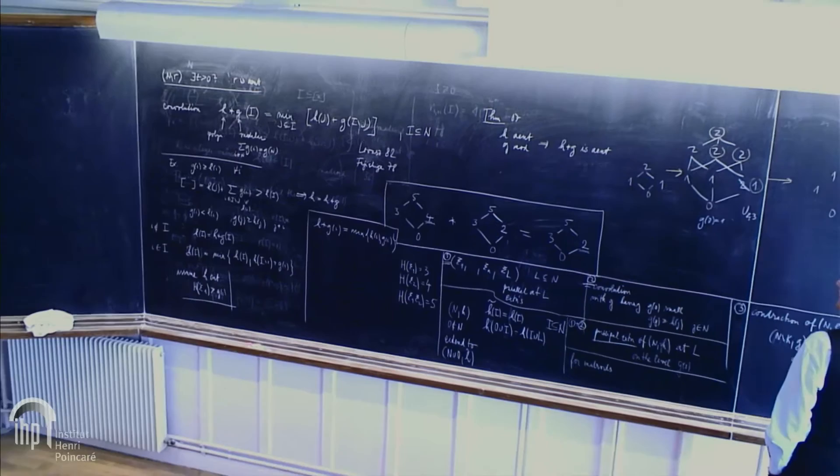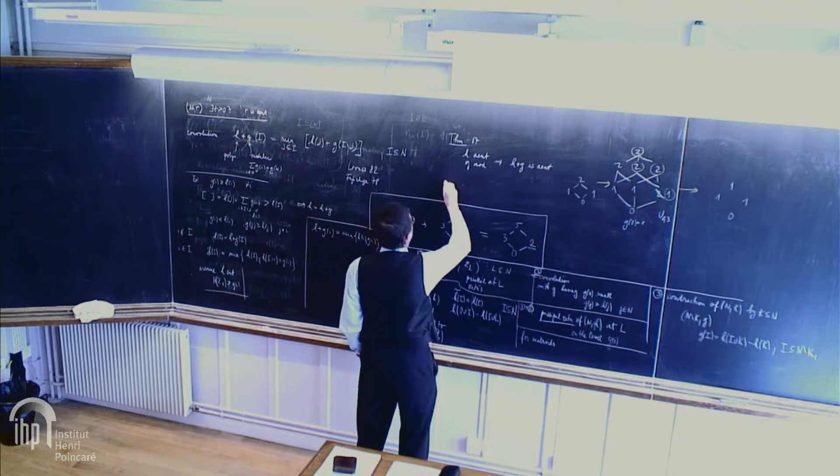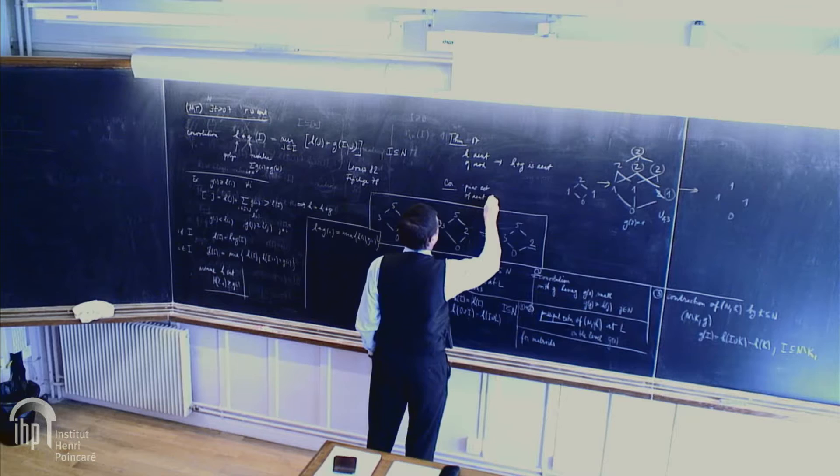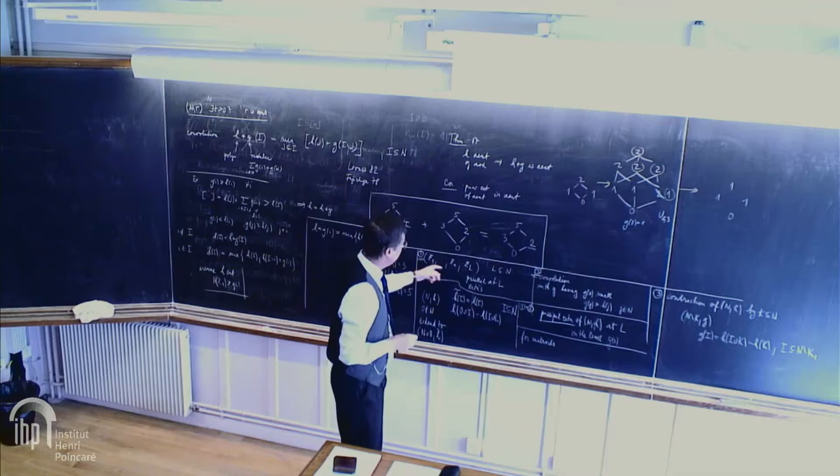And by this theorem, I can get the corollary that principal extension of almost entropic is almost entropic. Yes. Because adding a variable in parallel is no problem. And then we need convolution.